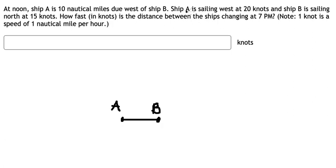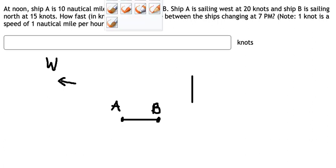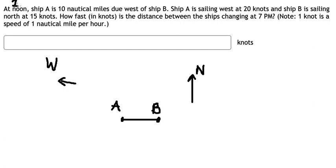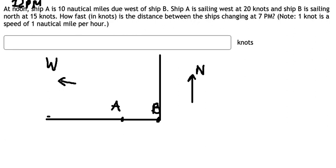About ship A, they will go to the west — that is in this direction — and to the north, they will go in this way. At noon, that is about 12 PM. After 7 PM, we have the new distance for ship A and ship B. This is the new location of ship A and this is the new location of ship B — after seven hours, since 7 PM minus 12 PM is about seven hours.